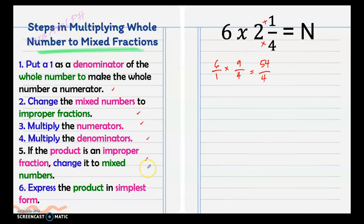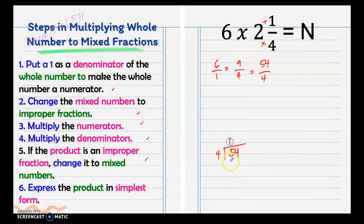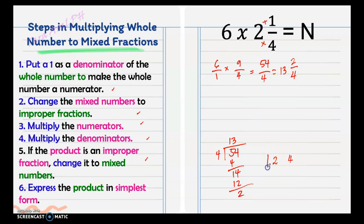If the product is an improper fraction, change it to a mixed number. This is an improper fraction, so we simplify it: 4 goes into 54 — we get 13 with remainder 2. So the whole number is 13, the remainder 2 is the numerator, and copy the denominator, which is 4. Since 2 and 4 can still be reduced to lowest terms — their common factor is 2 — we get 1 and 2. So our final answer is 13 and 1 half.